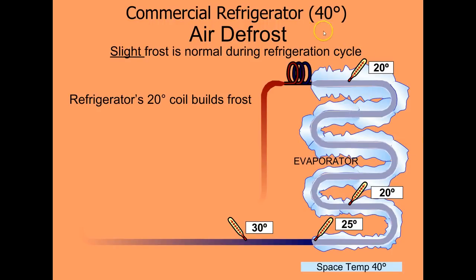We have a commercial refrigerator that is running a box temperature of 40 degrees Fahrenheit. It's using an off-cycle or air defrost to get the frost off the coil. There will be slight frost on the coil during the refrigeration process because the coil temperature is 20 degrees Fahrenheit, and that's what you need to have to get the box temperature down to 40 degrees Fahrenheit.